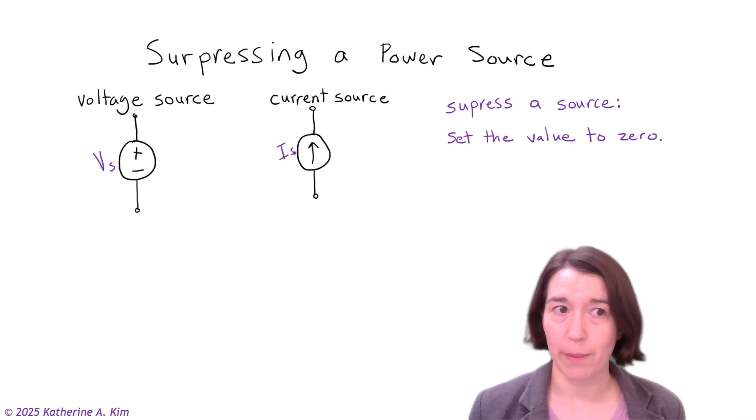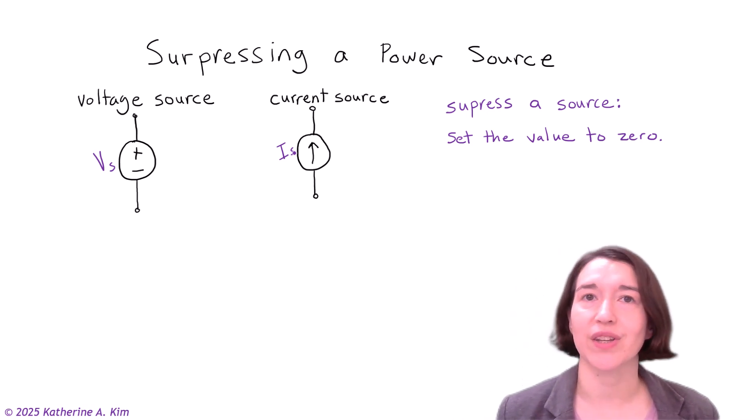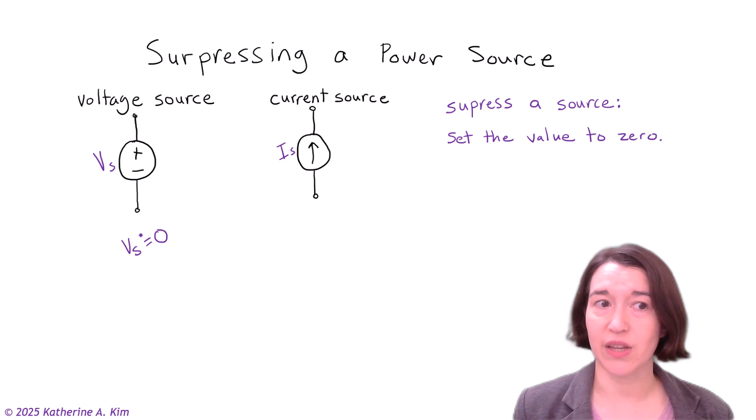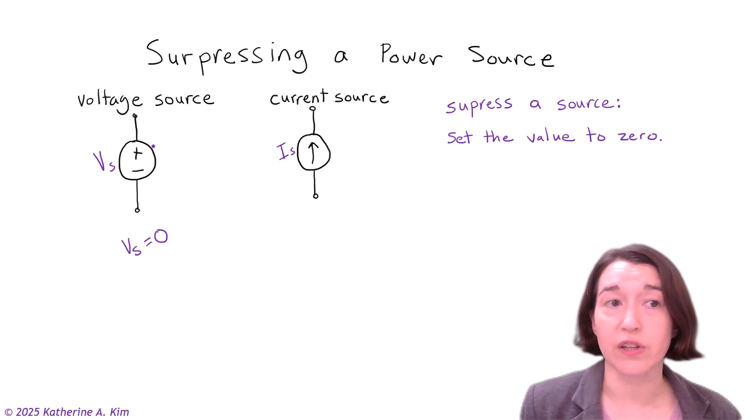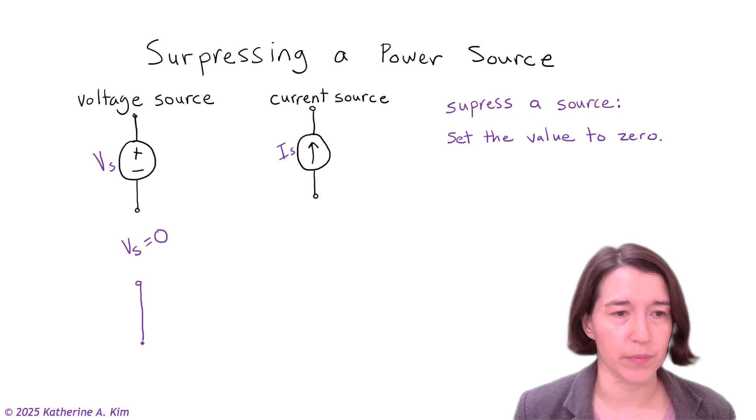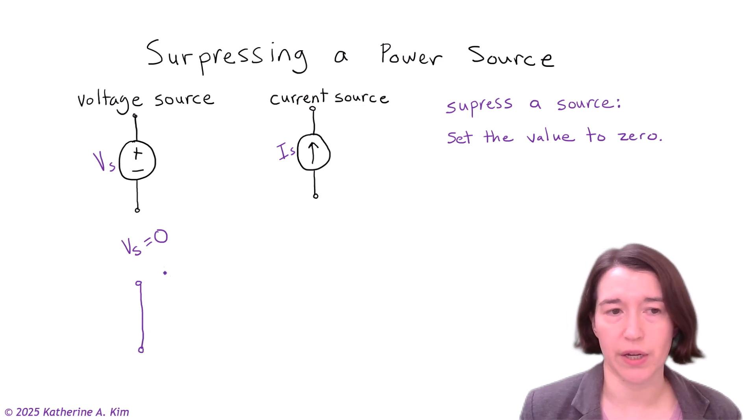And so that means for a voltage source, that would become zero. So if Vs equals zero, that means that there's no voltage difference between the top and the bottom terminal or the nodes. So that's equivalent to them being directly connected, which is a short. So once it's suppressed, it becomes a short circuit.